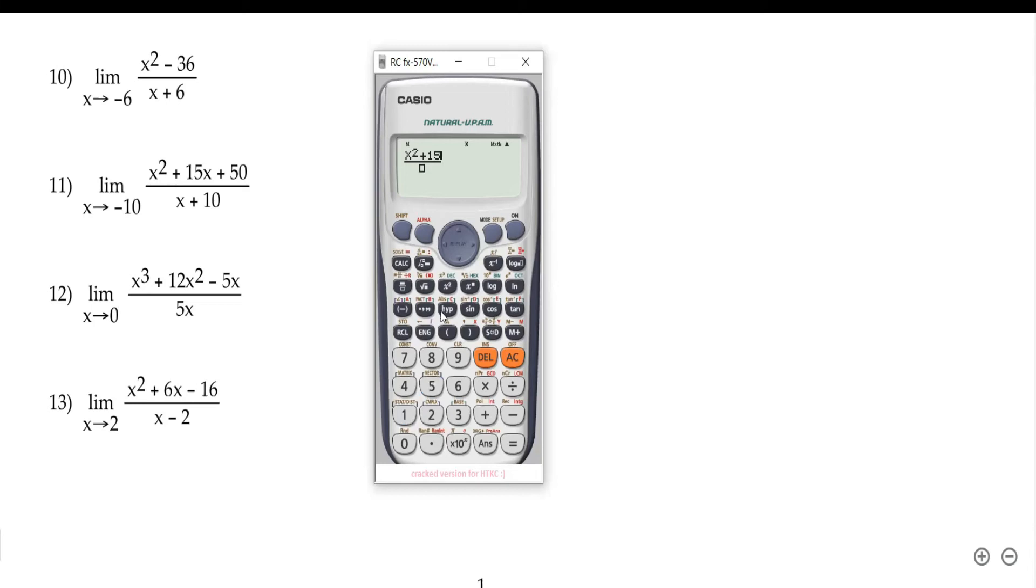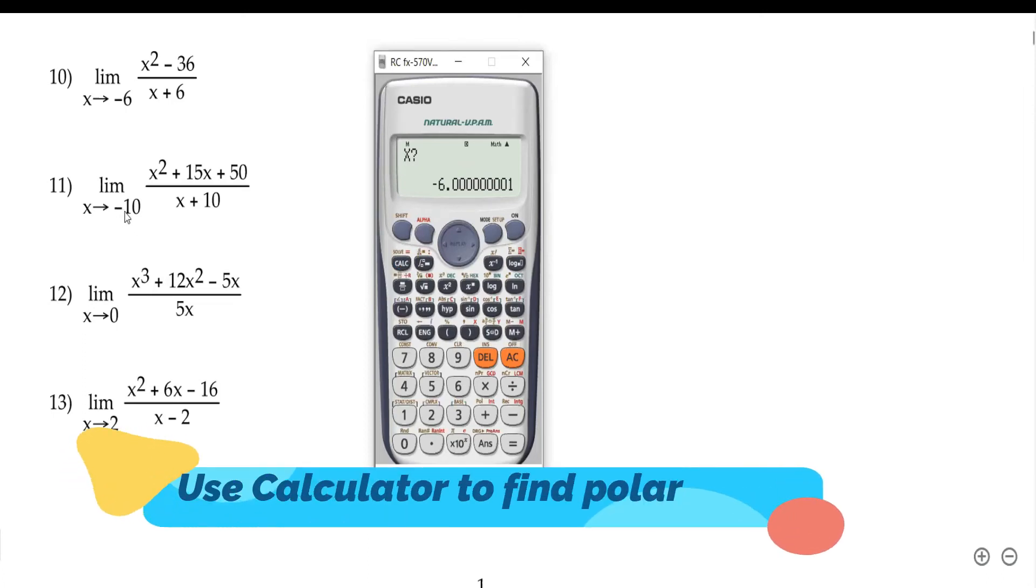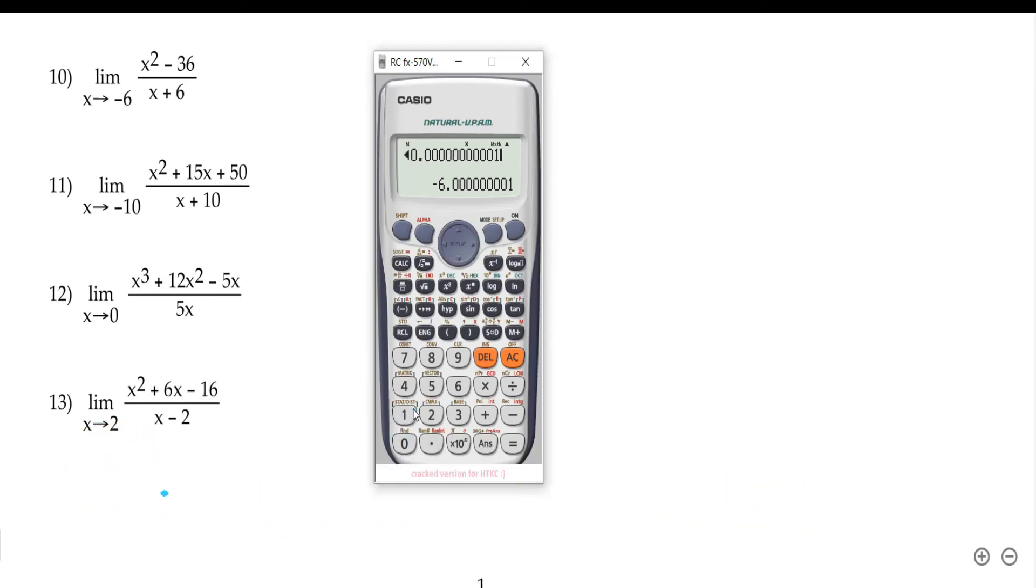This x squared plus 15x plus 50, and then you're dividing this by x plus 10. You work this out by pressing calculate. It's going to ask you for what value of x. The value of x we're using is negative 10.0000001 because that's the closest value we can get to negative 10. You put this in, the limit is negative 5. That's how you do limit on the calculator. There is no limit symbol, we press this to get negative 5.